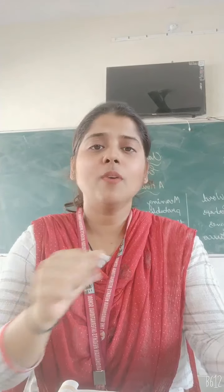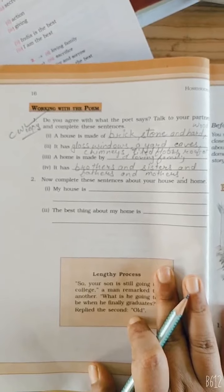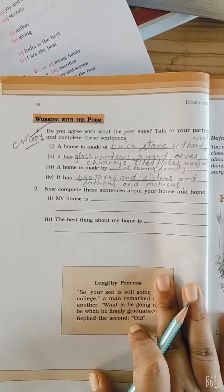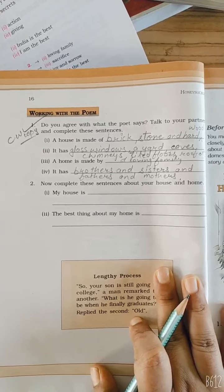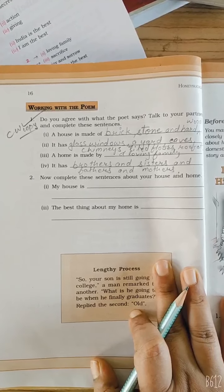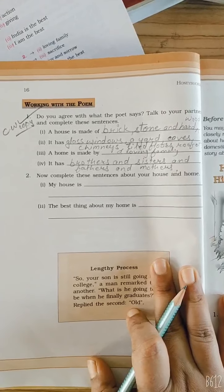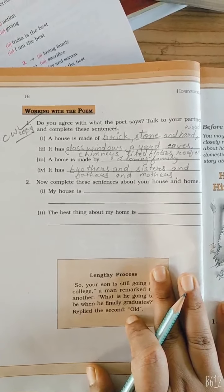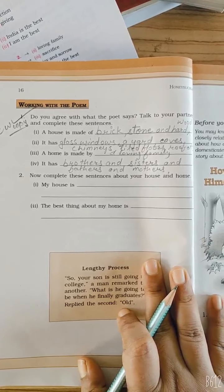There is a difference between house and home. I hope you all have understood this. Now kids, there is an exercise. Number one: do you agree with what the poet says? Talk to your partner and complete these sentences. First: a house is made of brick, stone and hardwood. Second: it has glass windows, a yard, eaves, chimneys, tiled floors, roofs, etc. Third: a home is made by a loving family. Fourth: it has brothers and sisters and fathers and mothers.